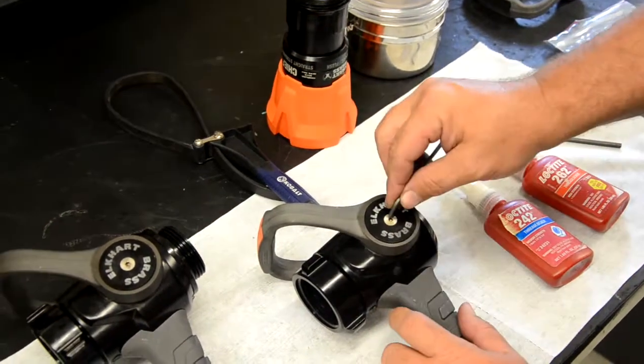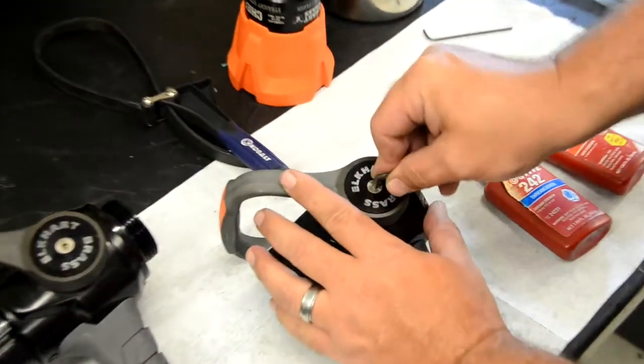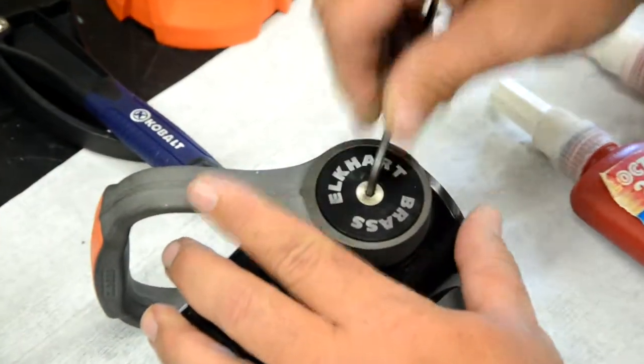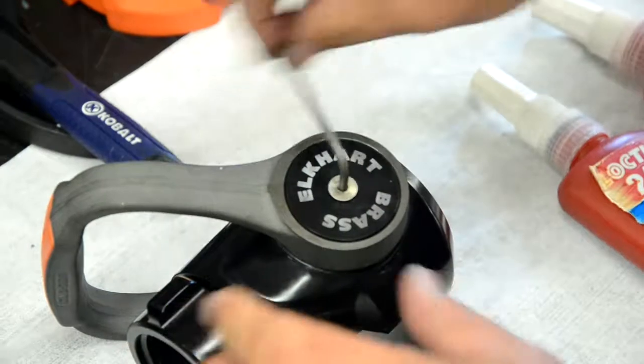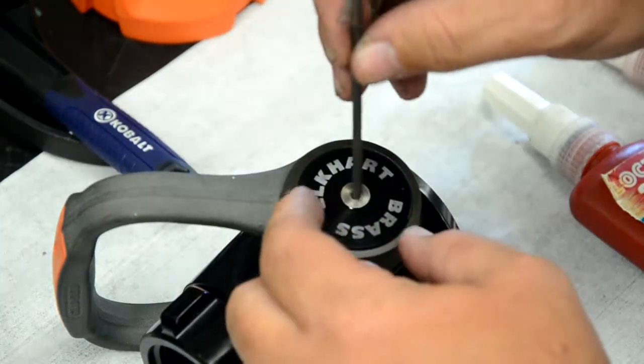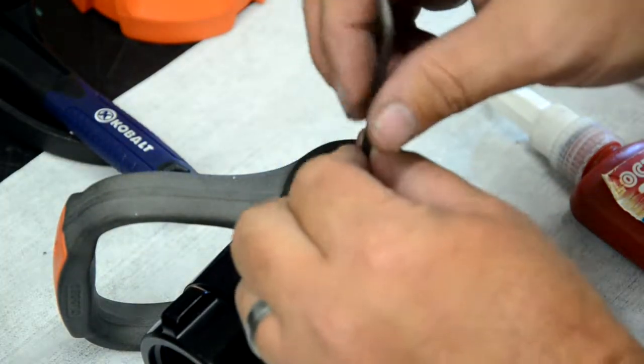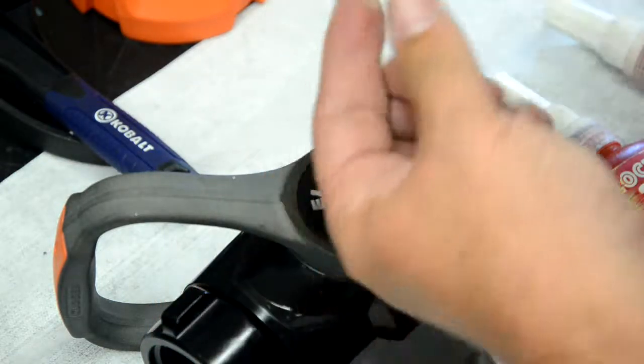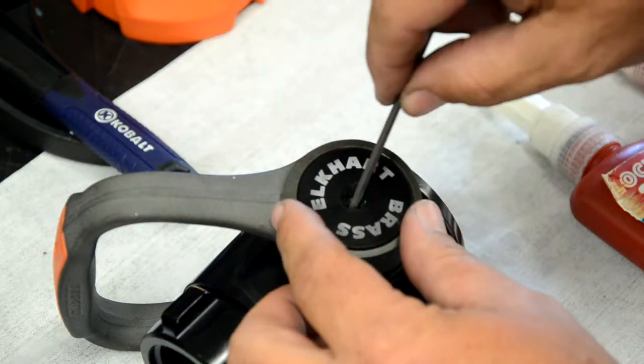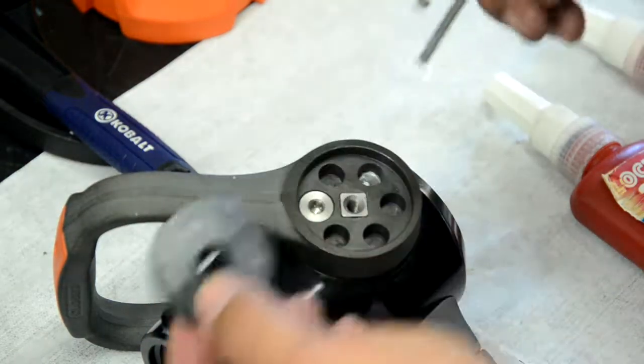Grab your allen wrench and remove the center set screw from the bail handle. Set this aside and save it. Then, use the allen wrench to gently pry the center cap up and out of the bail handle.